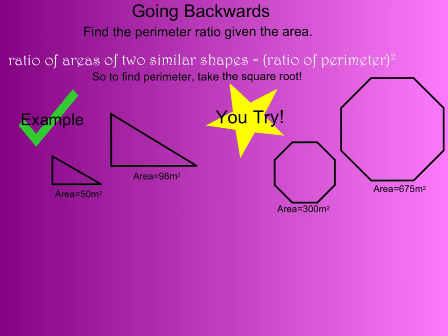So if I'm going backwards, I need to take the ratio of the perimeter and undo that squaring. I need to find the square root. To find the perimeter ratio, take the square root of the area ratio.